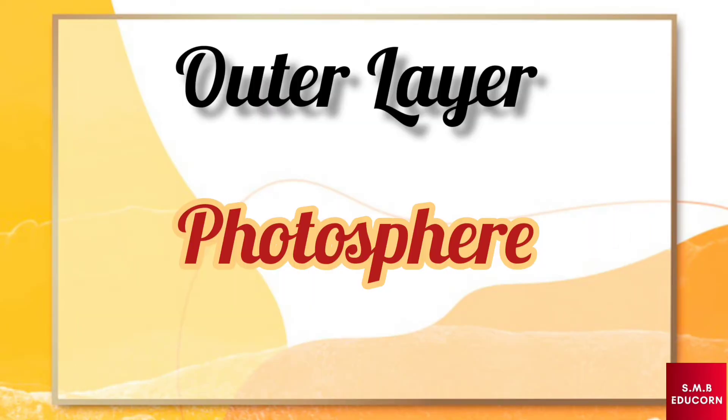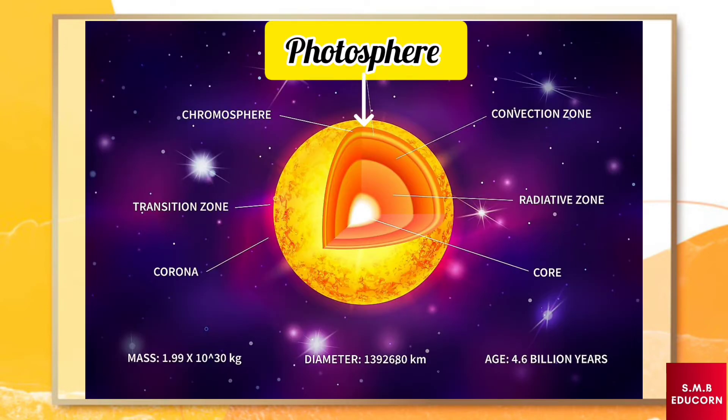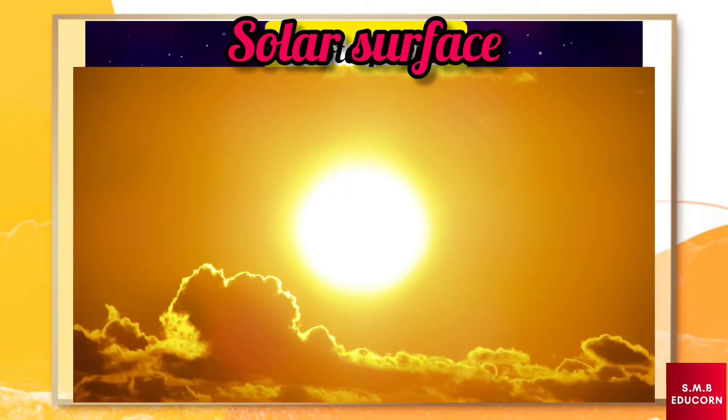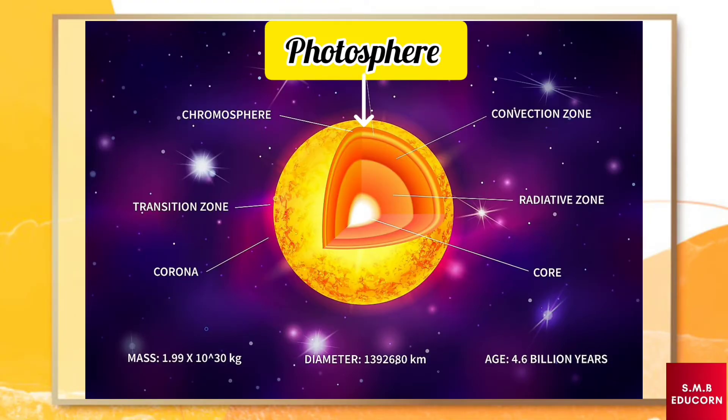Then we have photosphere. It is the innermost layer of the outermost layer of the sun. This layer visible directly from the earth. It is also called the solar surface. The temperature varies between 6,200 degree Celsius to 3,700 degree Celsius.